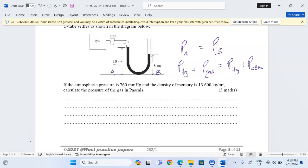Now with this, we can say that pressure due to mercury on side A, that is 10 centimeters of mercury, plus the unknown pressure of the gas